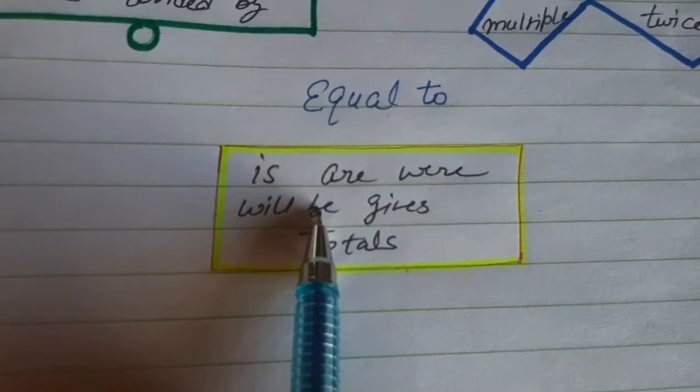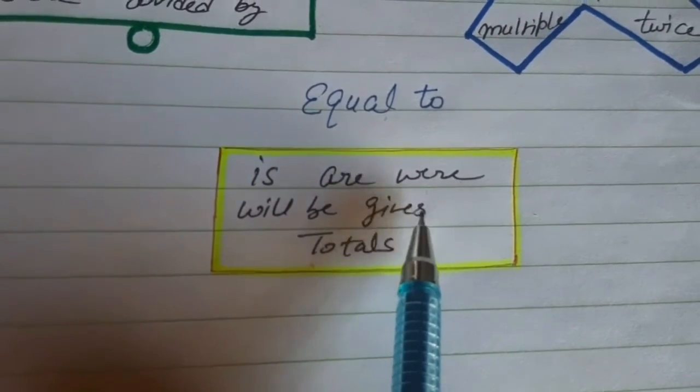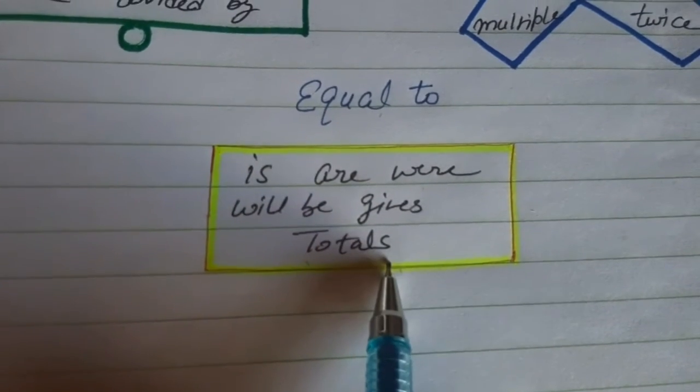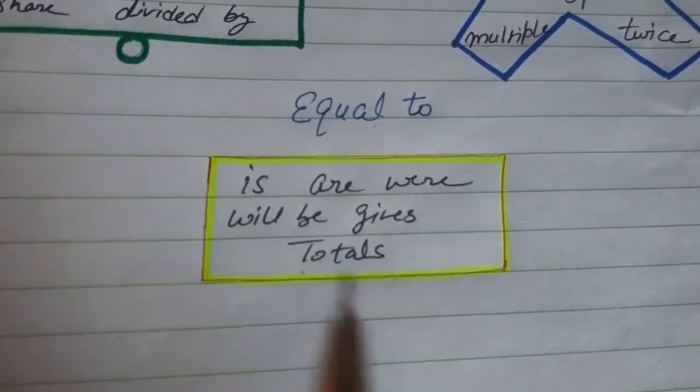Will be, gives, then it will give, or it gives, or it totals. So all of these are used for equal to.